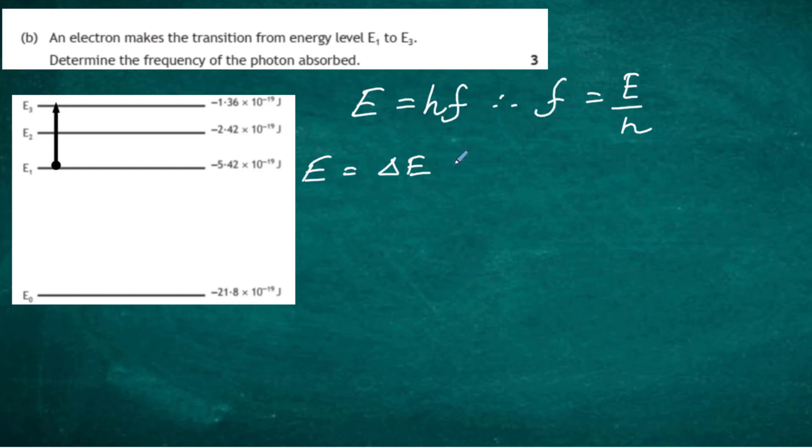All we have to do is take the big energy level number, 5.42 times 10 to the power of minus 19, and subtract the smaller energy level where it reaches 1.36 times 10 to the minus 19, and that's going to be in joules remember.